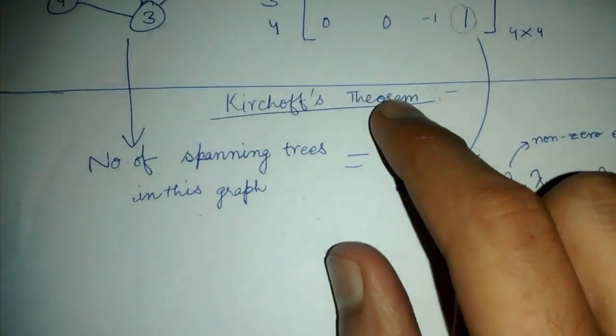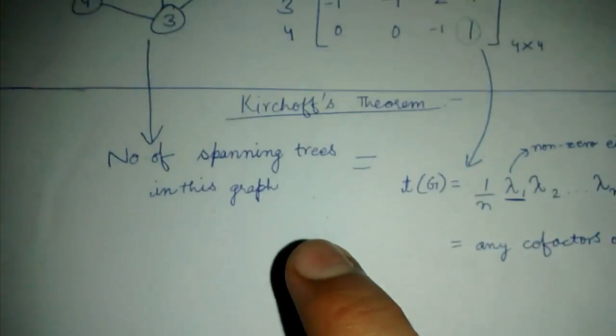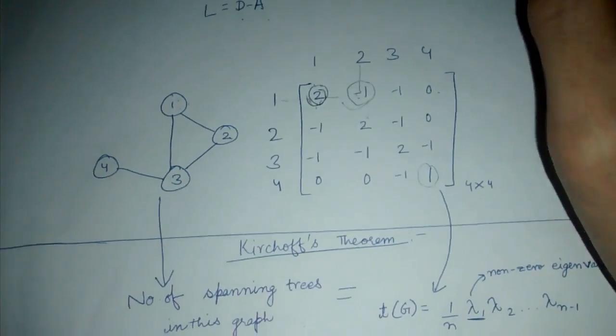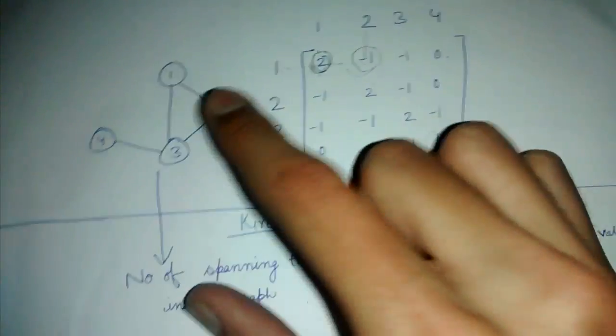We will be quickly looking at Kirchhoff's theorem or the Kirchhoff's matrix tree theorem. So in the last lecture we saw the Laplacian matrix of a graph. This is the Laplacian matrix for this graph.